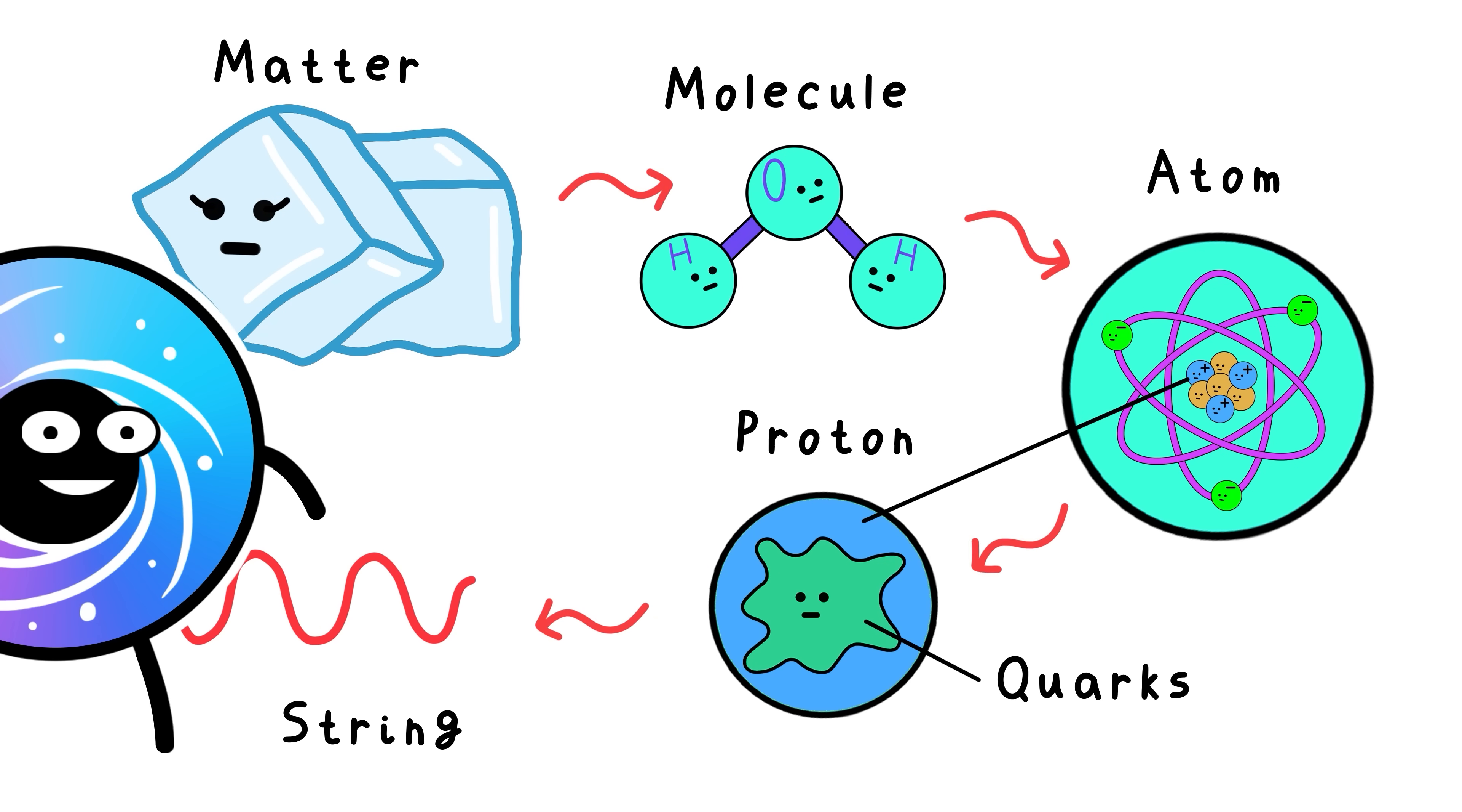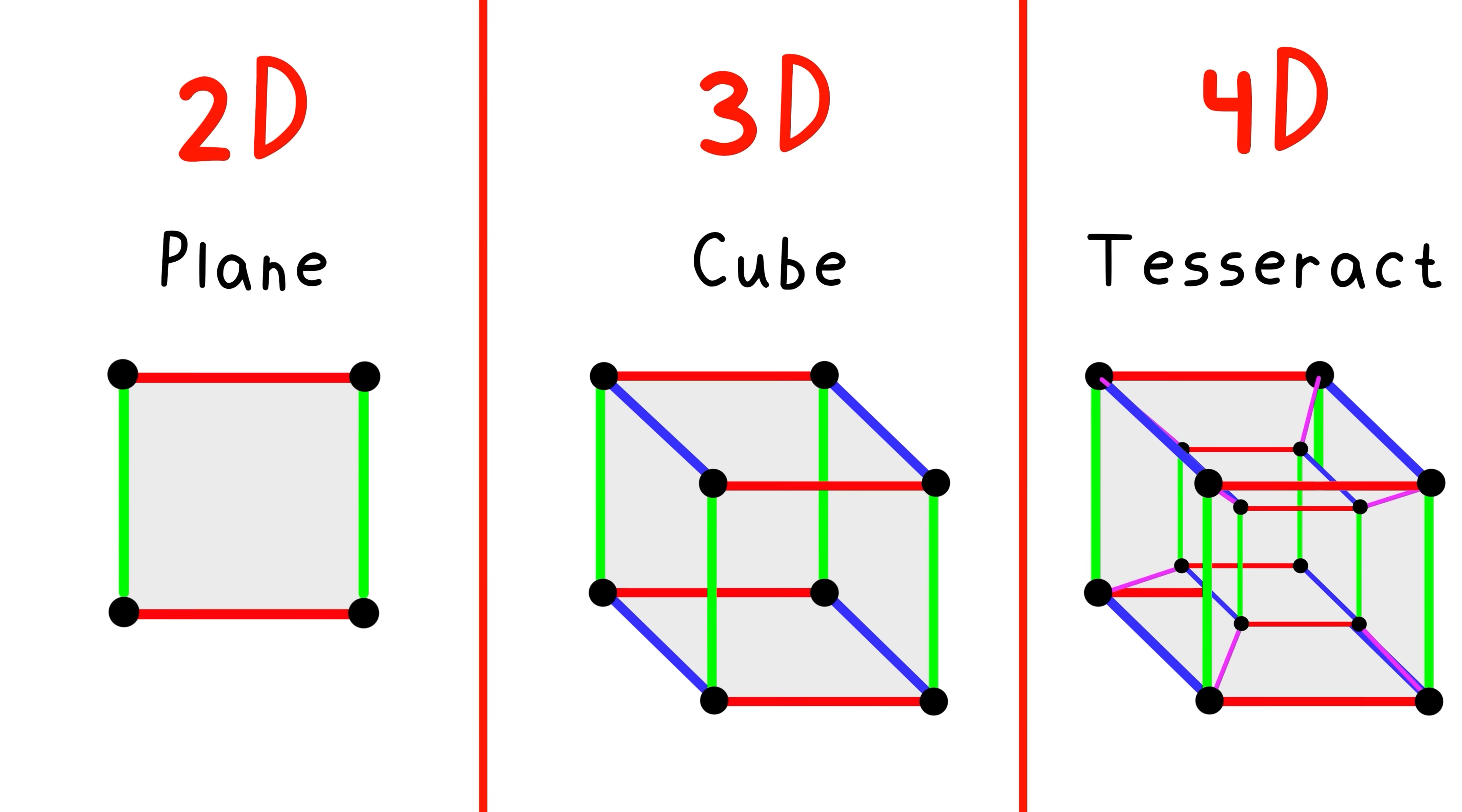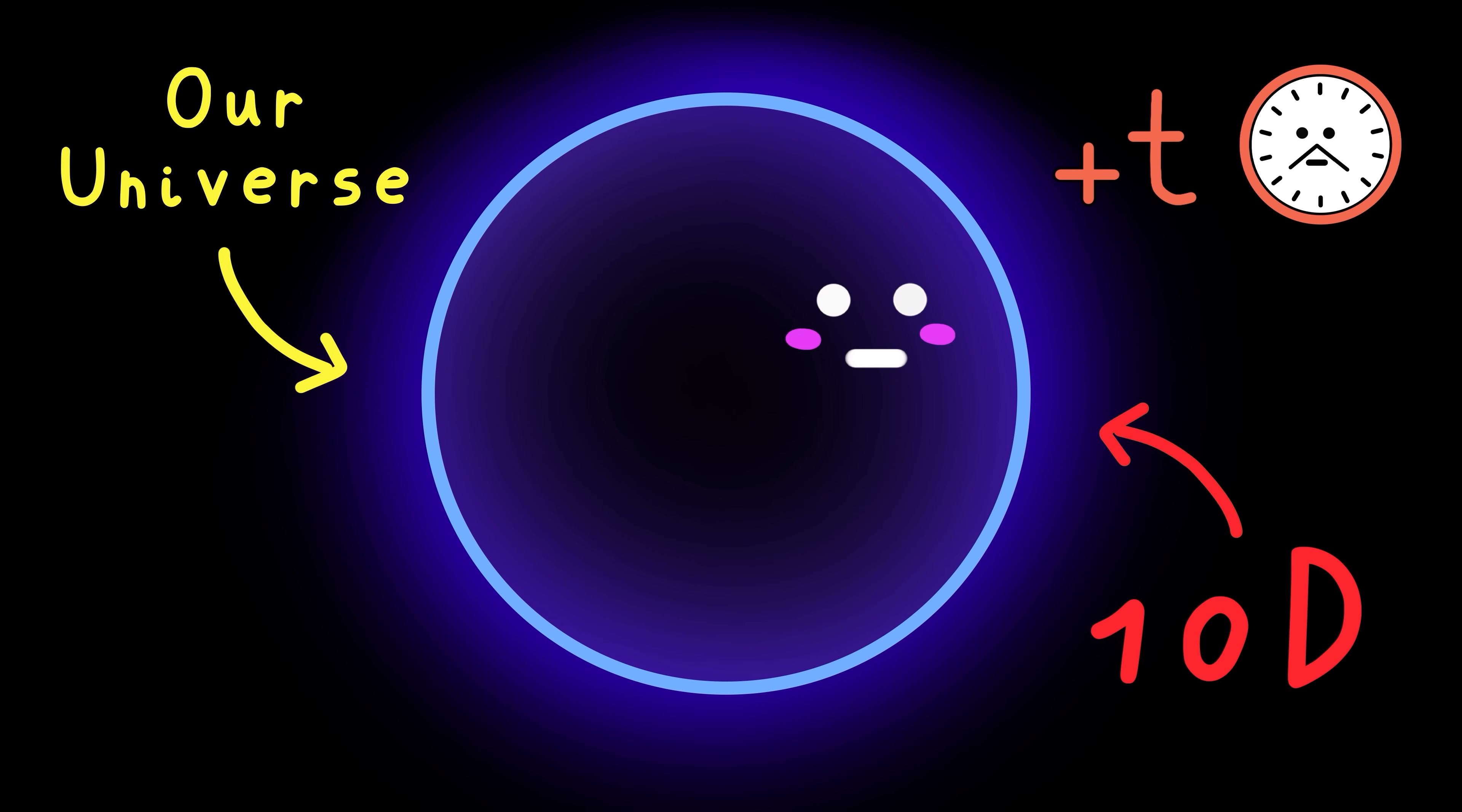And the crazy thing, Kyle, these strings have access to extra dimensions. That's an extra six for themselves on top of the three that we use. That's right, our universe actually has, in this theory, 10 total dimensions, including time.